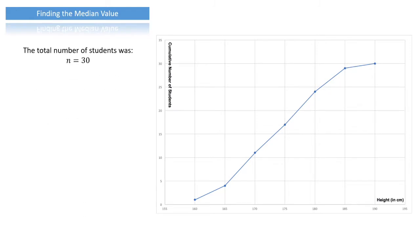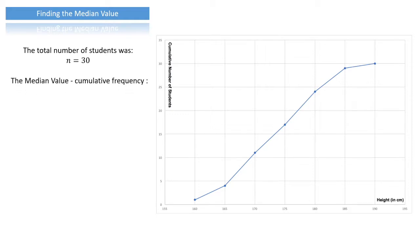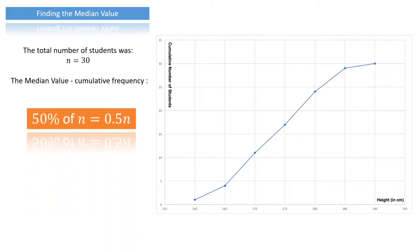To find the median value, the key rule to remember is that the median corresponds to a cumulative frequency of 50% of the total number of outcomes n — that's simply 0.5n. In this case n equals 30, so 50% of that is 15. We can already label the number 15 on the vertical axis of our graph.